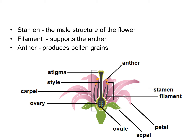Starting with the male parts of this flower — the male part is called the stamen. It's easy to remember because it has the word 'men' in it. There are four stamens in this diagram. The stamen is made up of two parts: the filament, which is the stalk that supports the anther, and the anther, which is the top part that produces pollen grains — the male gamete.